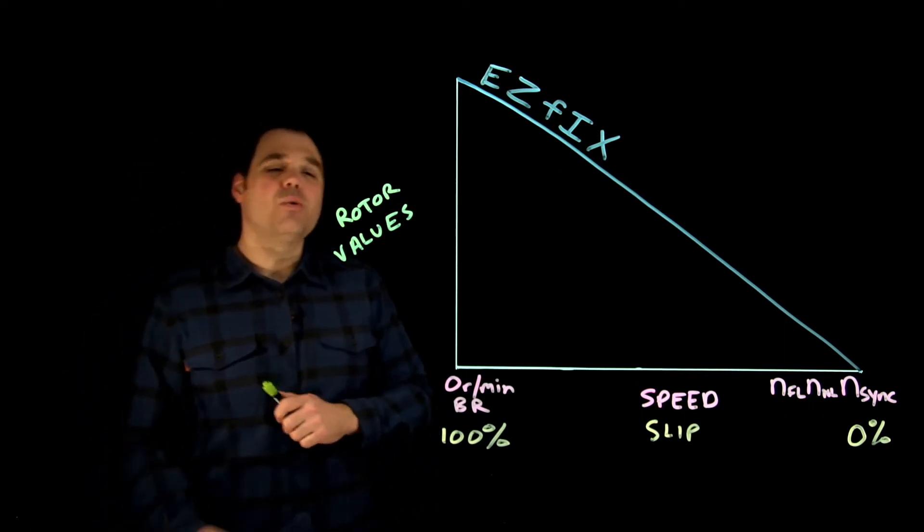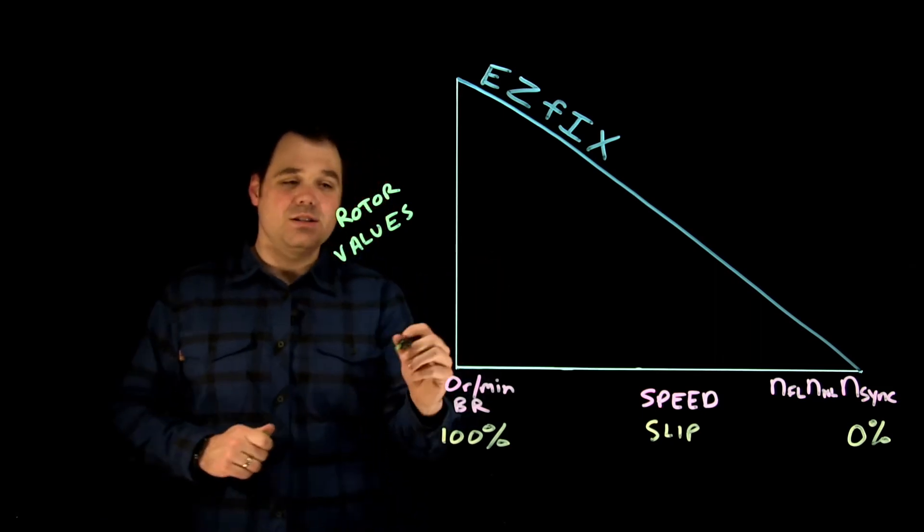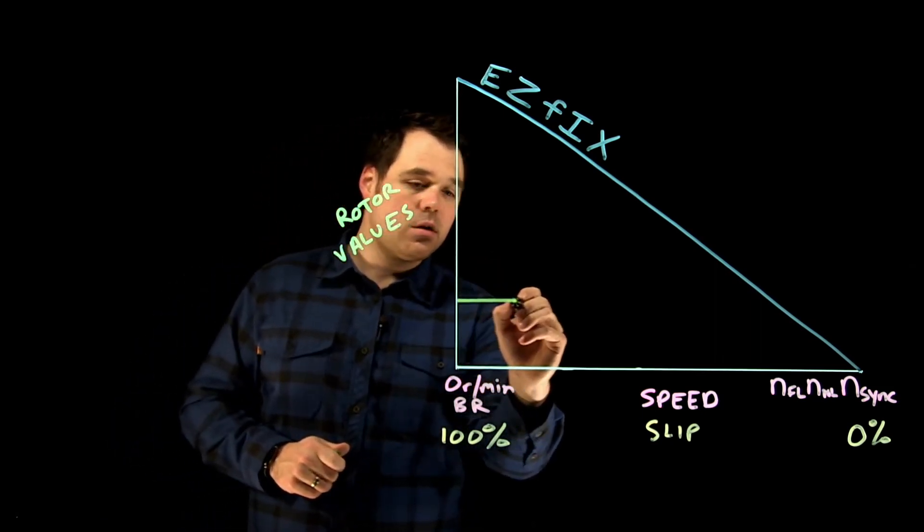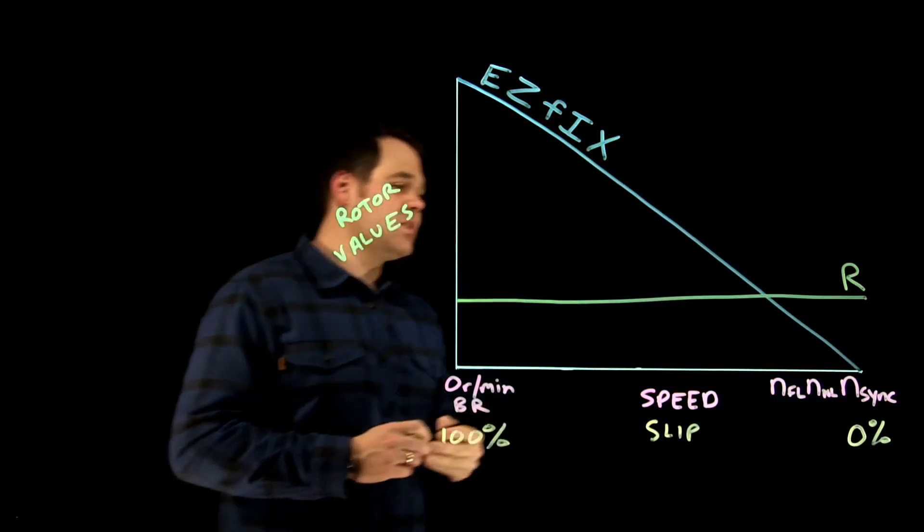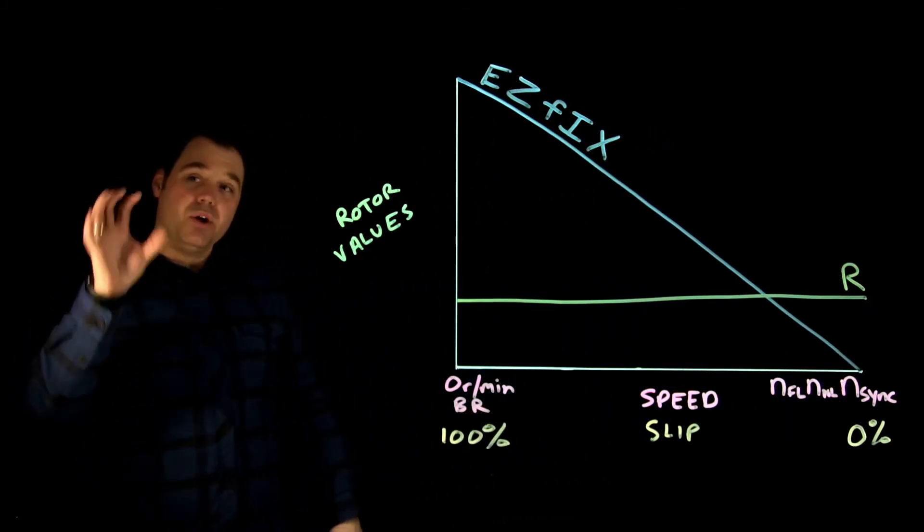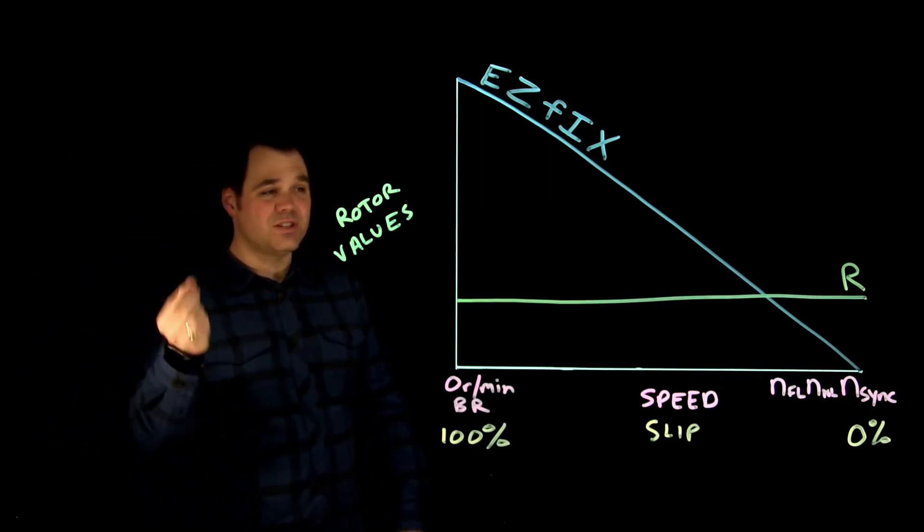Now, there's something that's always constant inside a rotor, it will never change. And what's constant inside a rotor is our resistance of a rotor. Once the rotor is built, that resistance will never change. So the resistance is considered constant.